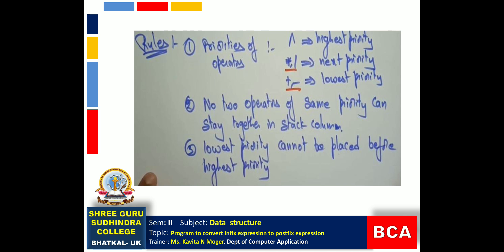Plus and Minus have the lowest priority. Rule number 2: no two operators of the same priority can stay together in the stack column. For example, plus and minus have the same priority, so they cannot stay together in the stack. Before pushing a same-priority operator into the stack, we need to pop the already-present operator. Rule 3: a lowest-priority operator cannot be placed before a highest-priority operator — the higher priority operator cannot tolerate a lower priority one, so we need to pop the operator that is in the stack.